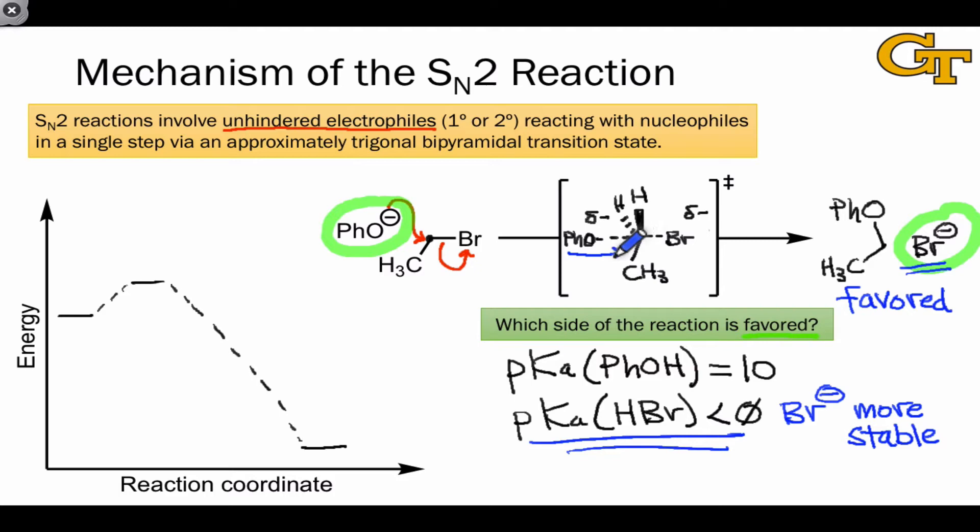One last thing to notice on this slide is that the nucleophile approaches the carbon leaving group bond from behind it, or from its backside. This direction of attack has important stereochemical consequences in cases when the electrophilic carbon is a stereocenter.